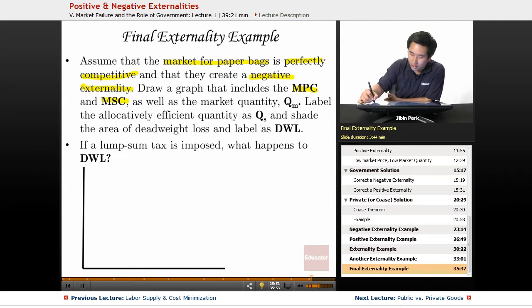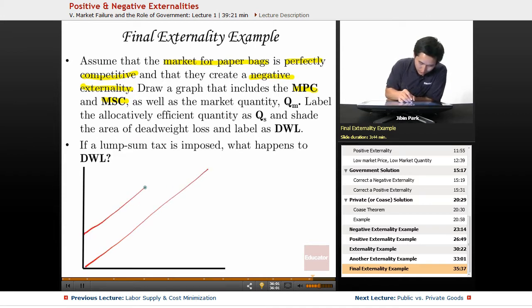Let's go ahead and draw this first. The MSC - how is that going to look like? And the MPC here. So if you have two lines like this, if there's a marginal social cost, remember the formula here is going to be MSC equals MPC plus MEC.